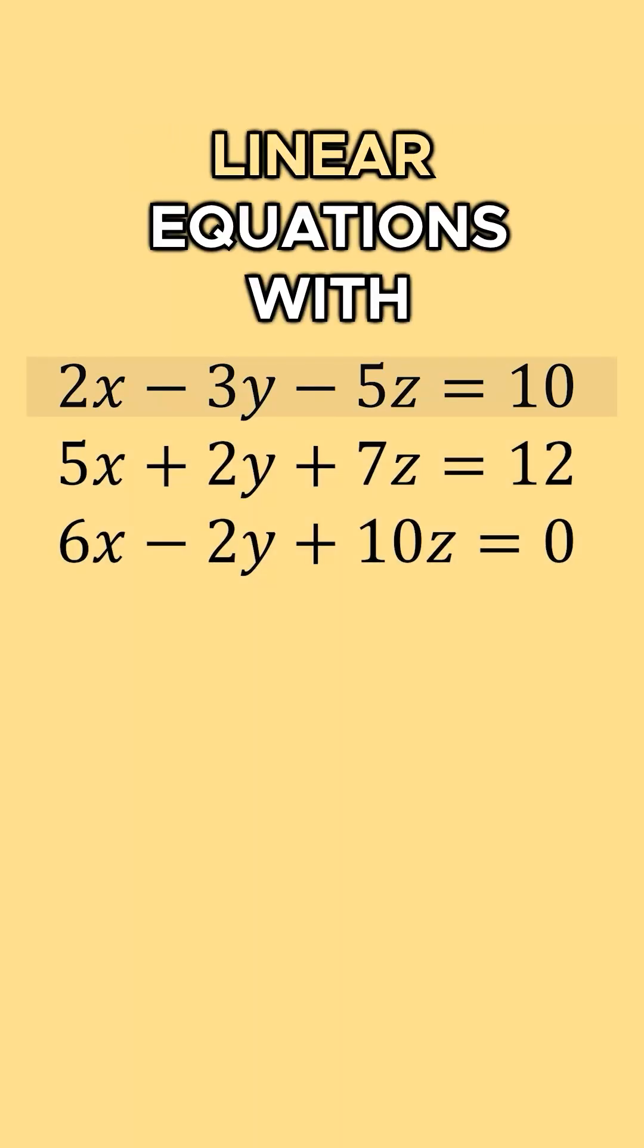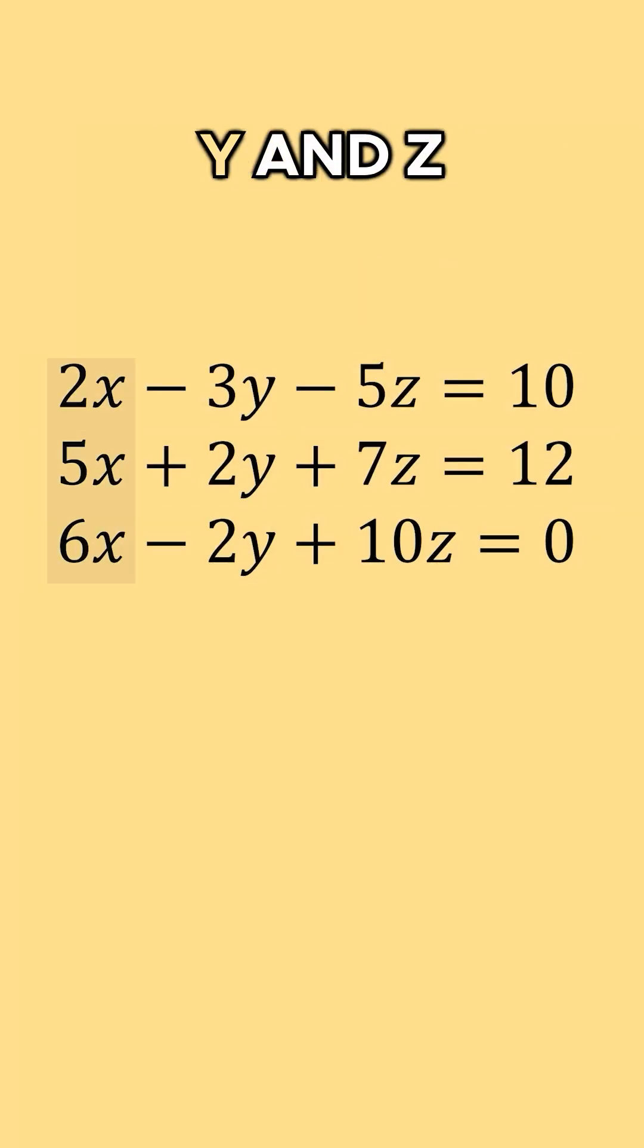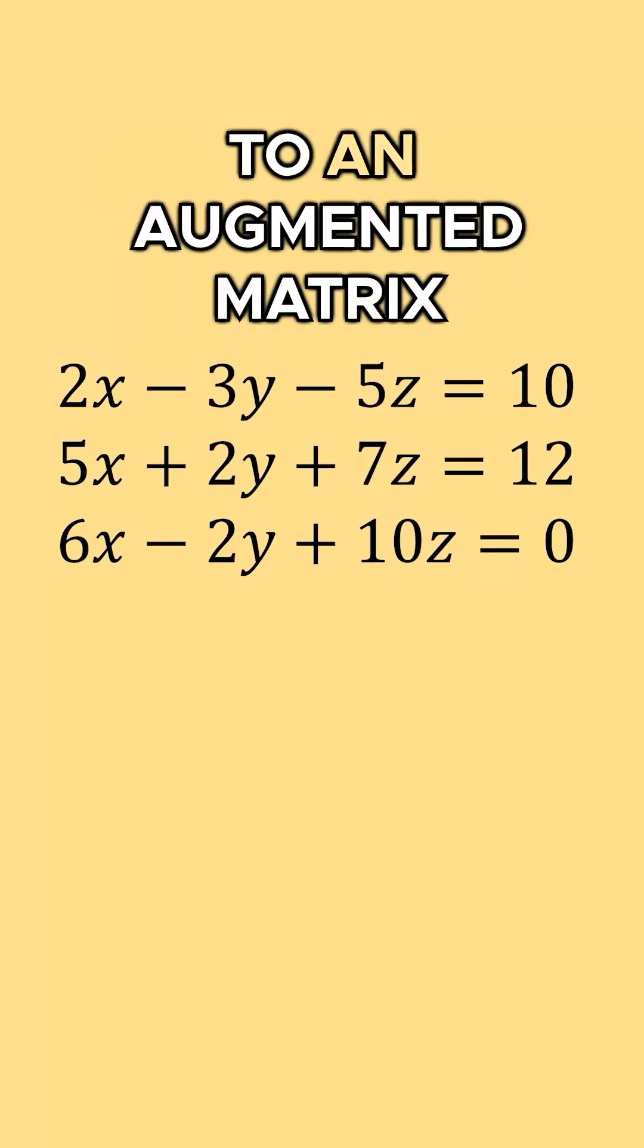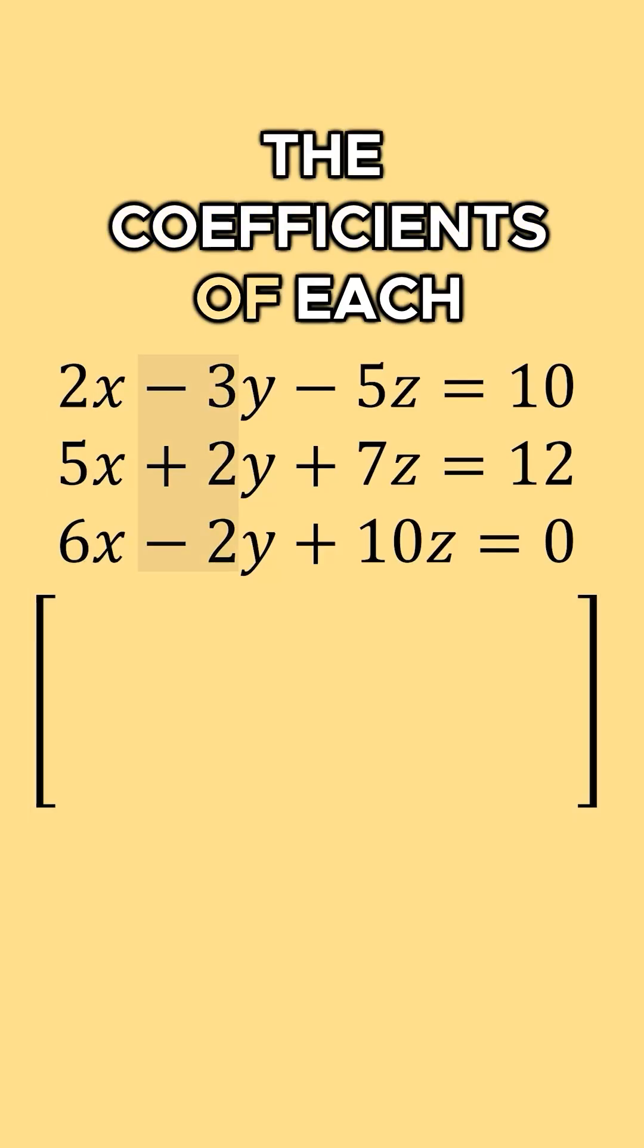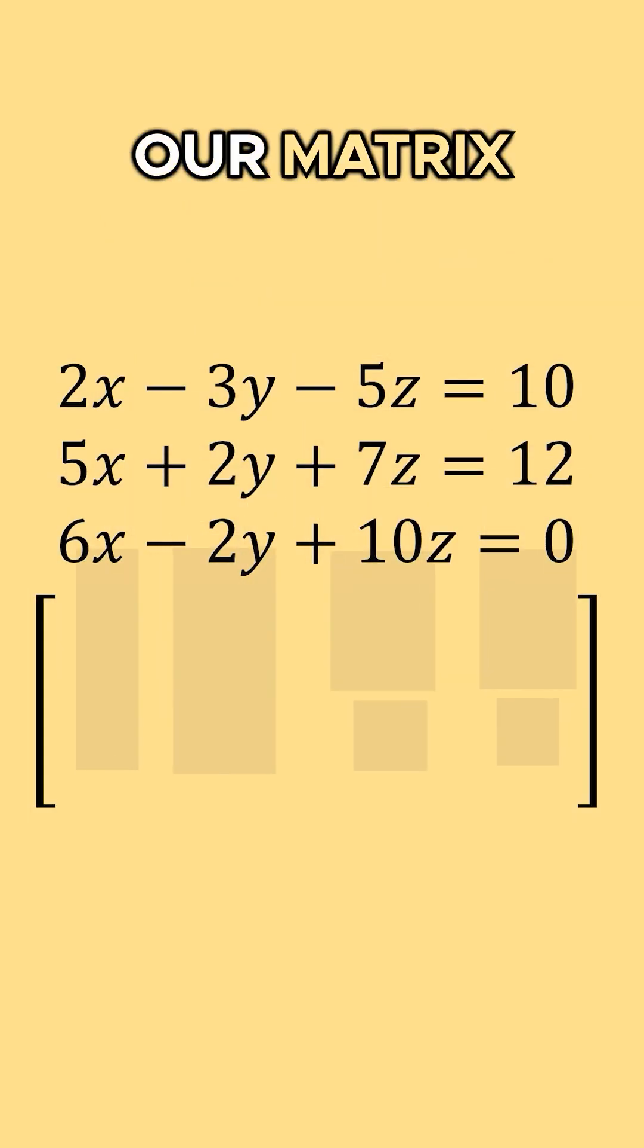Here I have three linear equations with the variables x, y, and z in them. And what we do whenever we're converting to an augmented matrix is we bring the coefficients of each variable down into our matrix.